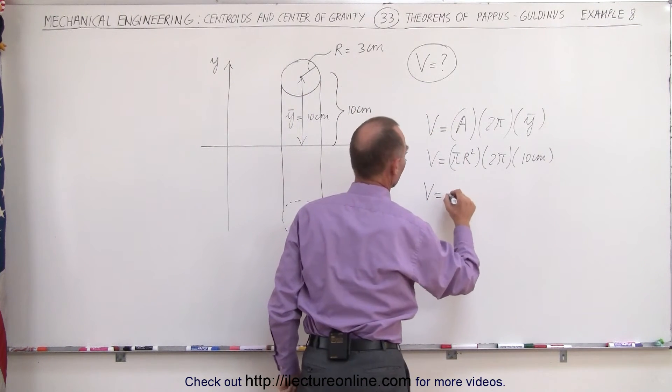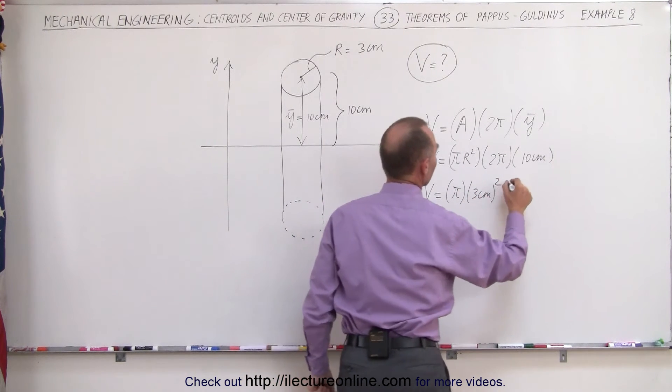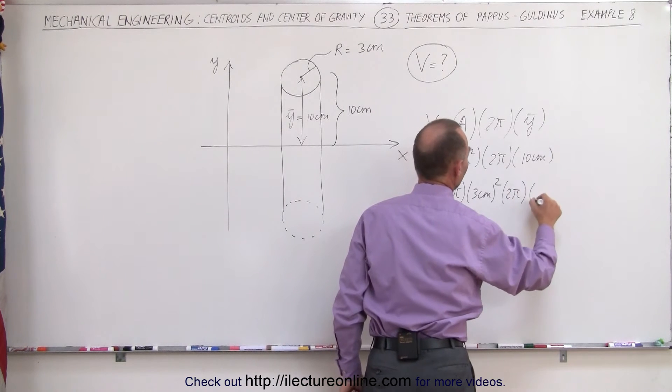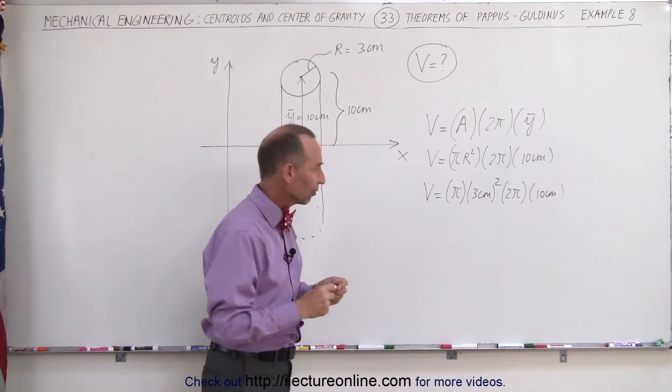V therefore is equal to π times 3 centimeters squared times 2π times 10 centimeters and centimeters squared and centimeters gives you centimeters cubed. That gives us volume.